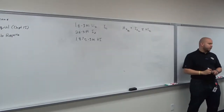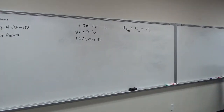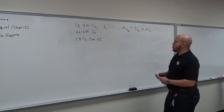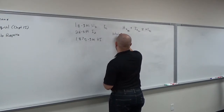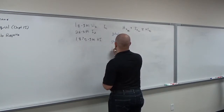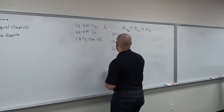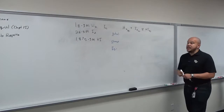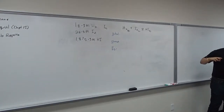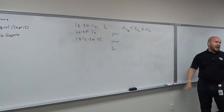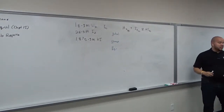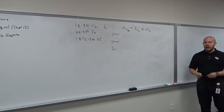The ICE table is structured as: Initial, Change, and Equilibrium — that's where the name ICE comes from. You separate the table into columns as a function of reactants and products. You don't have to draw boxes; on my answer keys you'll see me write it without lines.